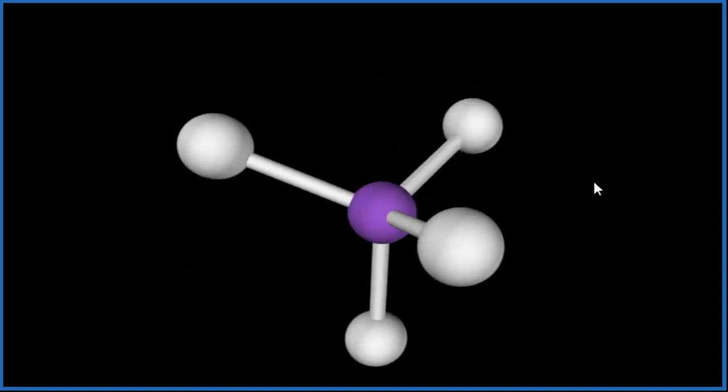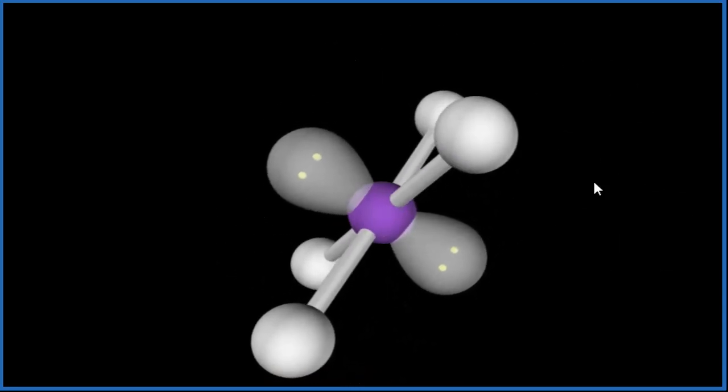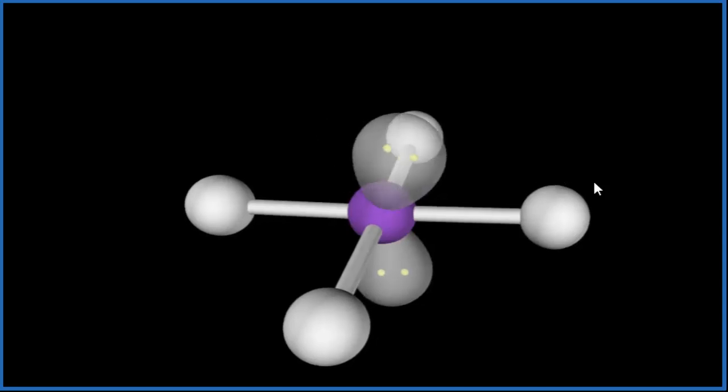At this point we have a tetrahedral molecular geometry but we need to add those two lone pairs. So we add one, two and we end up with this molecular geometry.